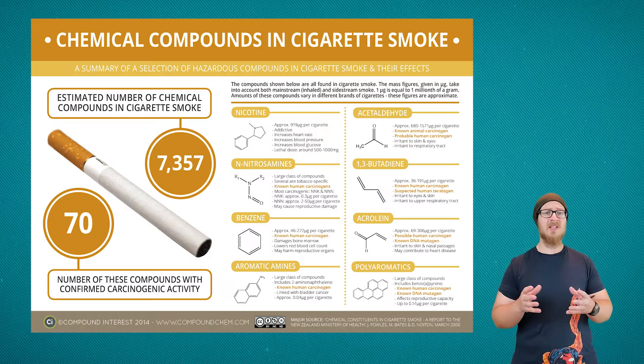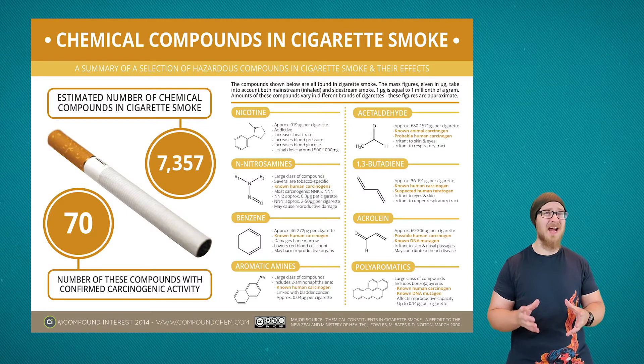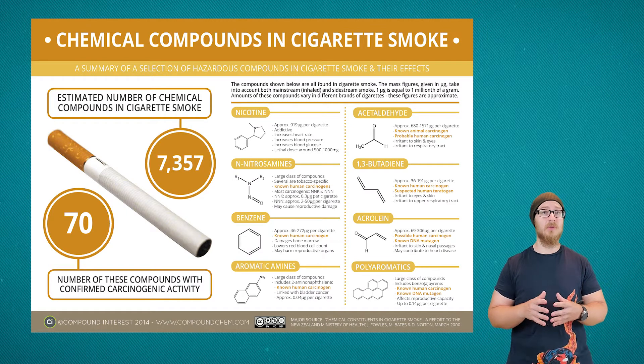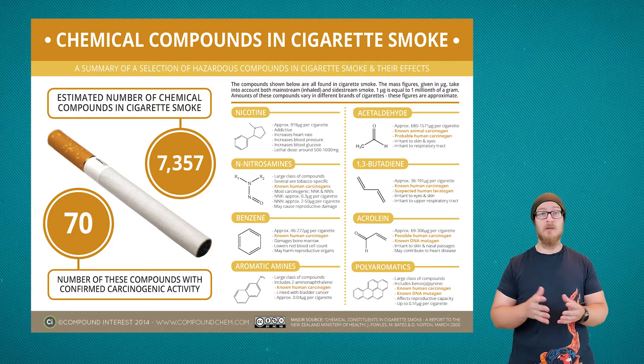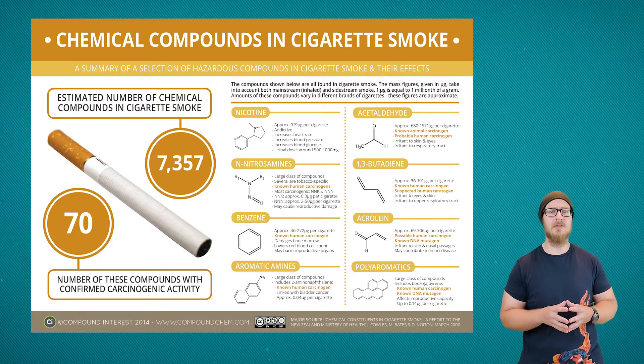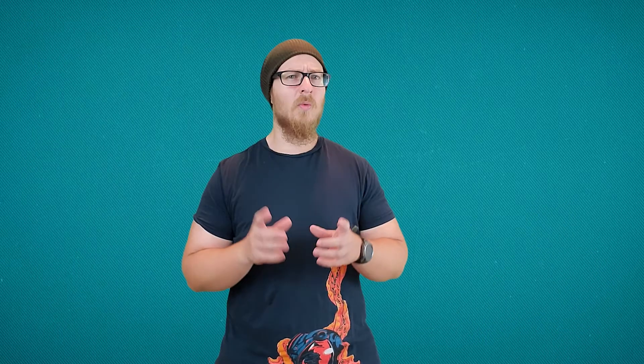The two most dangerous air pollutants are secondhand smoke from cigarettes and radon gas. Cigarette smoke has more than 4,000 dangerous chemicals when burned, which can lead to everything from eye irritation to lung issues, and of course we all know it can lead to cancer.